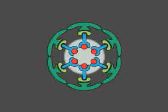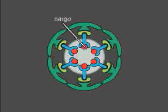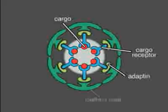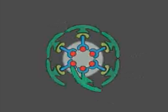The process involves a variety of molecules, including the cargo molecules that the cell takes in, the receptors that capture the cargo molecules, and molecules called adaptins that mediate contact between the receptors and the clathrin molecules that act to shape the vesicle forming at the plasma membrane.